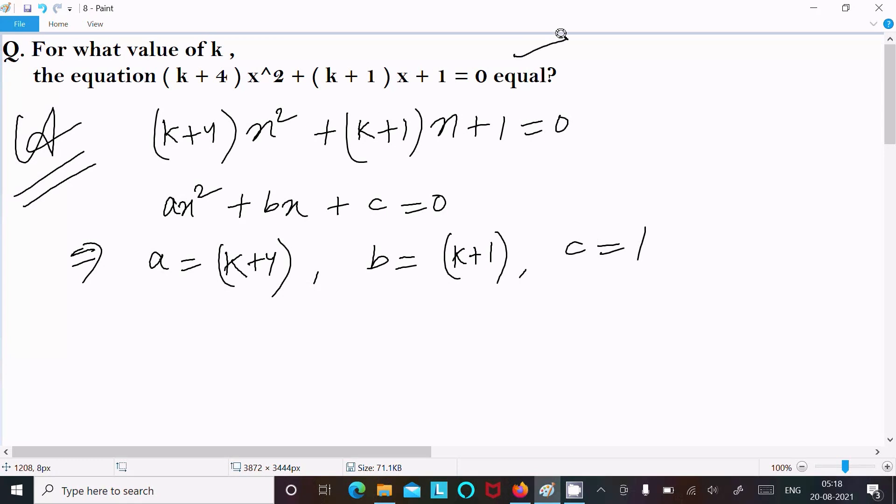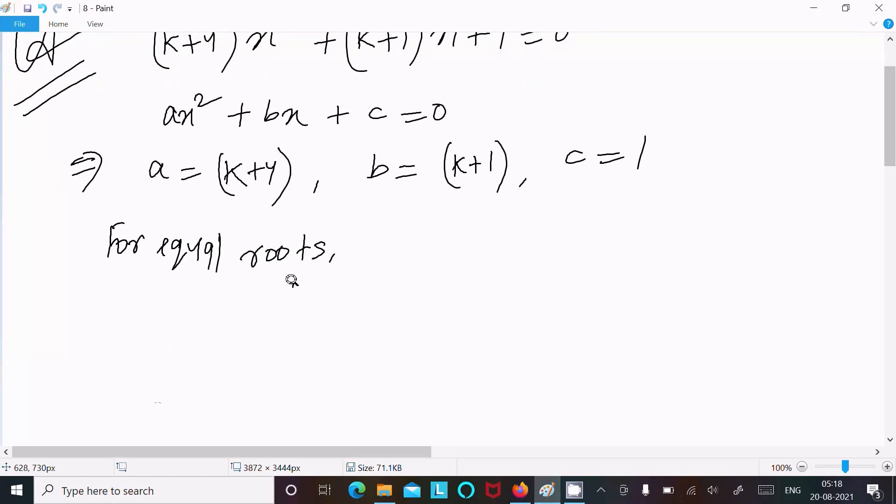After that, for equal roots, the discriminant D = 0. So D is b² - 4ac = 0.